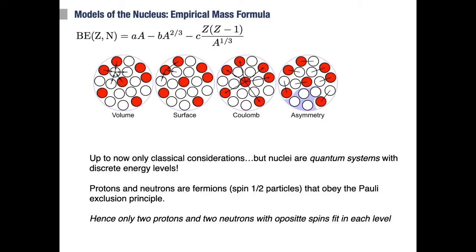The first quantum term we need to consider is related to the fact that protons and neutrons are fermions, and as fermions they obey the Pauli exclusion principle. If the nucleus has energy levels, then only two protons or two neutrons with opposite spins can fit in each level. Therefore, certain combinations of protons and neutrons will have a lower energy than other combinations with the same mass number.